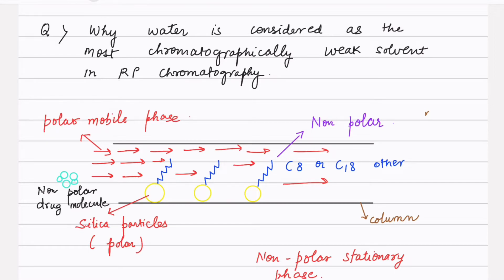Here I have drawn a figure. This black line is our column. The yellow circles are silica particles, which are polar in nature. These polar silica particles are made nonpolar by attaching C8, C4, or C18 groups, so that our stationary phase becomes nonpolar in nature.